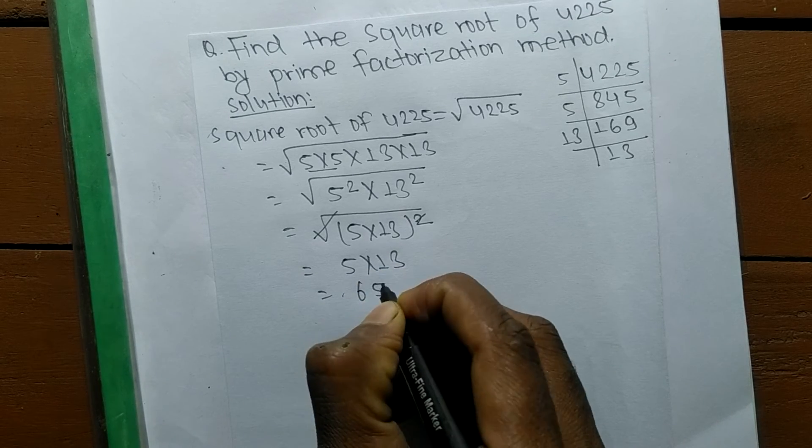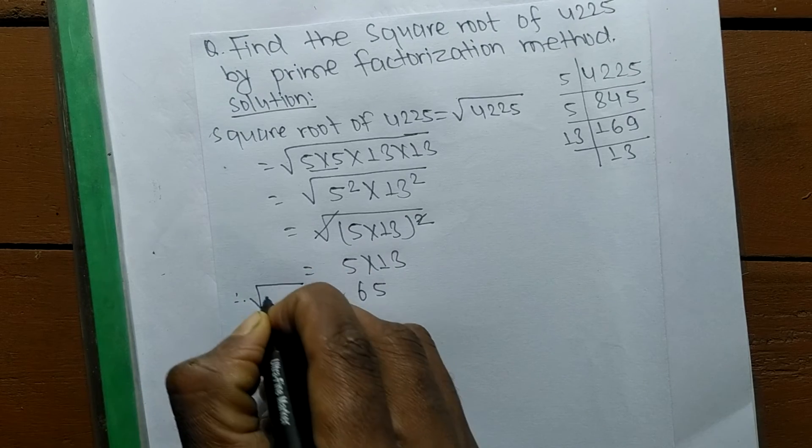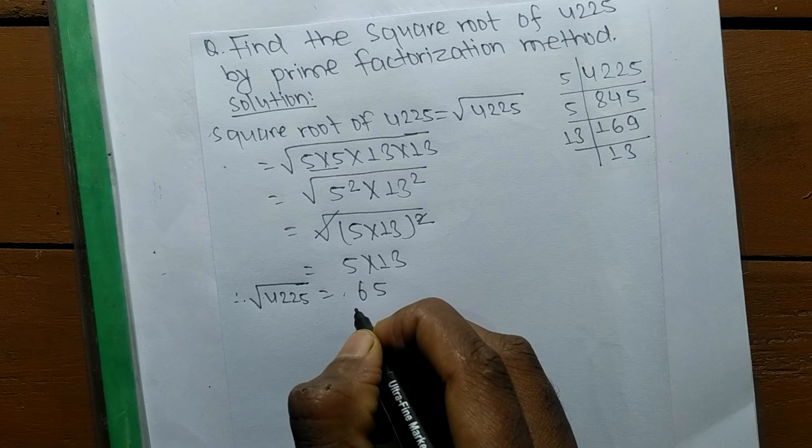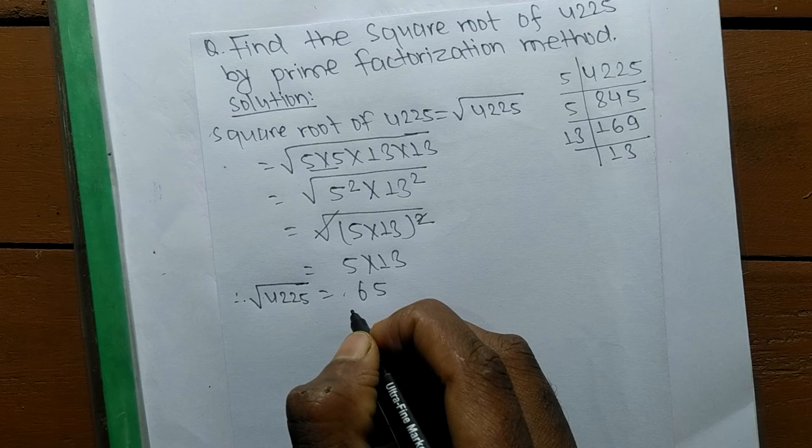5 times 13 is 65. So the square root of 4,225 is 65.